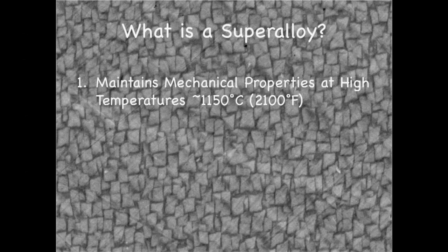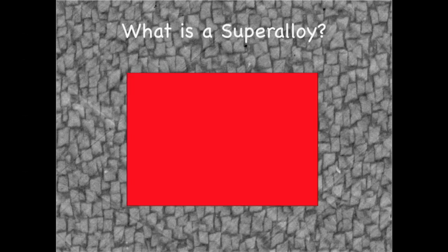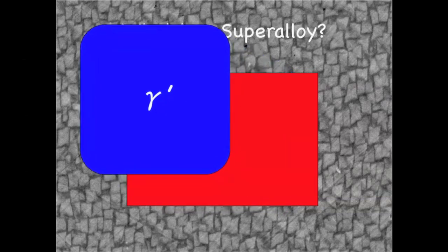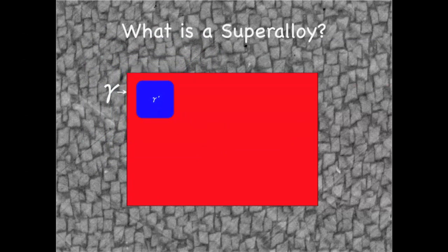So what is a superalloy? Well, superalloys are alloys which maintain their mechanical strength and stability at temperatures that most other alloys fail at. Superalloys are comprised of a two-phase microstructure consisting of L1-2 type precipitates, which I'll call gamma prime, that are embedded in a disordered FCC matrix which is known as gamma.